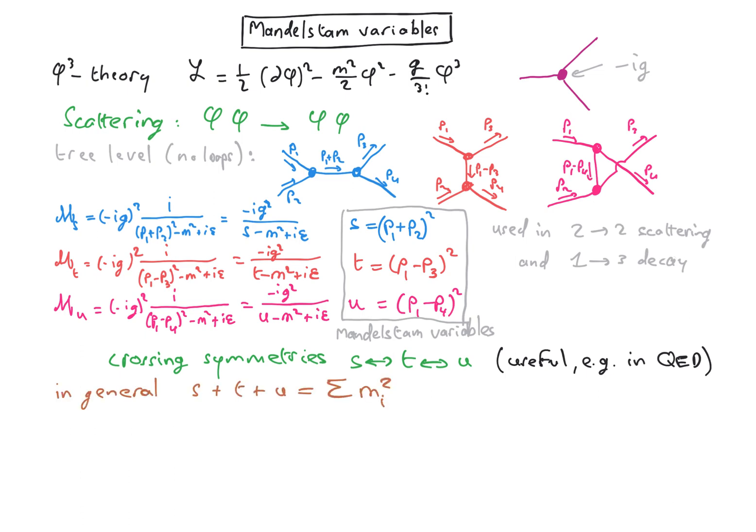As an exercise, you can show that this equation holds in the phi-3 theory where all the masses are the same because we only have one field, the field phi with only one mass m. For that, you need to use energy momentum conservation and the fact that the external lines are on mass shell. That means that p squared equals m squared for the external lines.